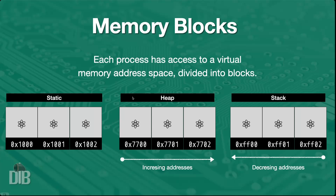Next, right after the static block, we have the heap area. The heap is where we interact in terms of allocating what's known as dynamic memory. In Zig, we interact with the heap by means of allocators, and this is one of the distinctive features of Zig — any type of allocation on the heap has to be done explicitly via an allocator. Those allocations occur in this memory block area known as the heap, and as you can see, when we allocate on the heap we do so following increasing addresses, so subsequent allocations will have addresses with increasing numbers.